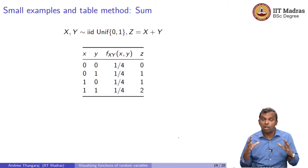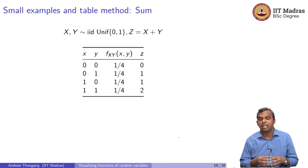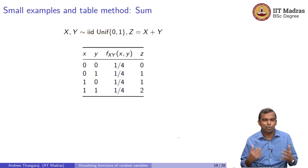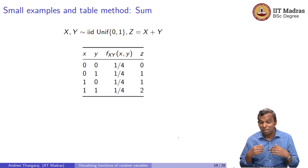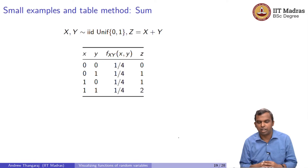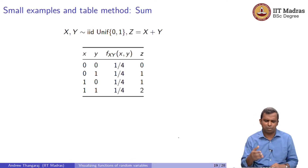The first approach is small-sized examples. Always do small-sized examples — these are discrete random variables. When they take very few values, the table method will continue to work. The wonderful table method that we saw for the one random variable case will continue to work. It is very simple. Let me illustrate it with a small example where X and Y are iid uniform {0,1} and Z is the sum. It is a very standard example — you just write down the table.